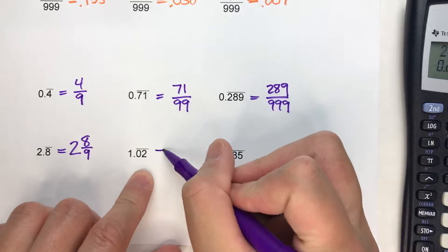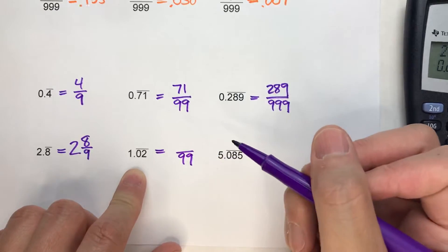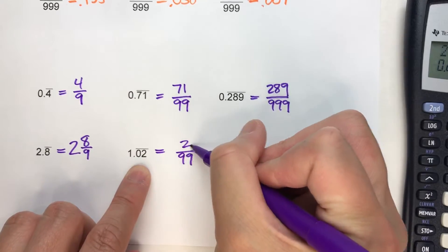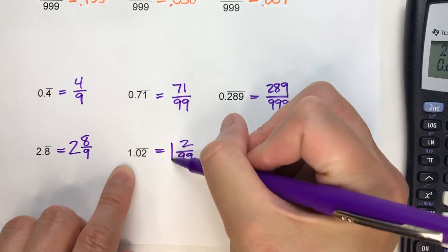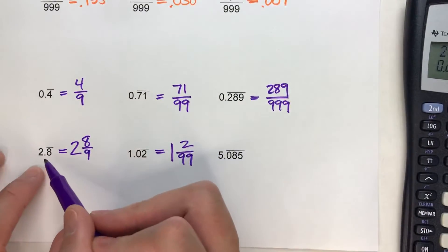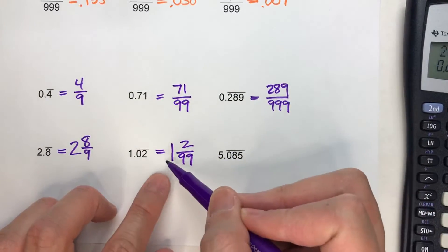Similarly, over here. We've got two digits repeating. 99 is my denominator. The digits that are repeating are 02. So that means that my numerator is 2. And then the whole number, 1, is just the whole number in front of the fraction. So when you've got these whole numbers with repeating decimals, they just end up being mixed numbers with a whole number and a fraction.